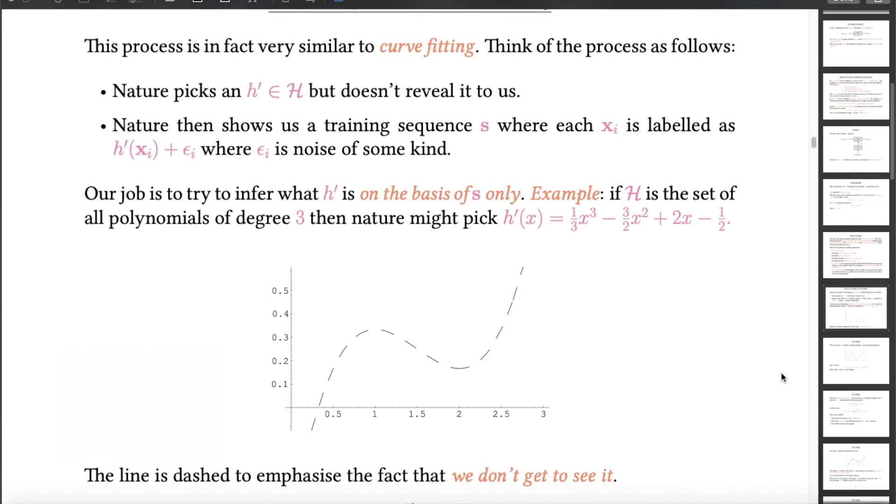So the trick here is to think of machine learning in terms of an adversary, in this case nature. And nature picks a function from a hypothesis space, but it doesn't tell you what it is. You only get to see information about this function by seeing specific points on it. Those points correspond to a training set.